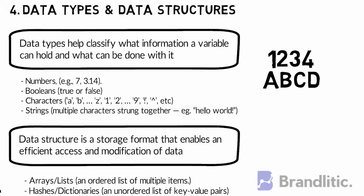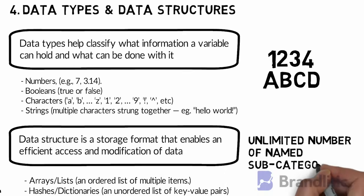Meanwhile, a data structure is also a data type but one that contains an unlimited number of named subcategories. In this way, a program can parse individual data types while still treating the entire structure as one data type.